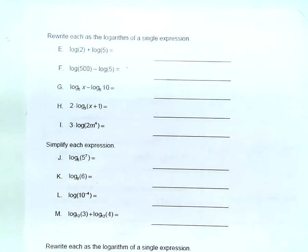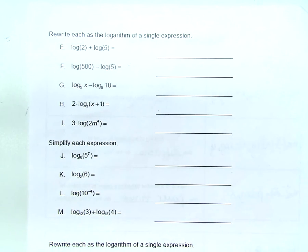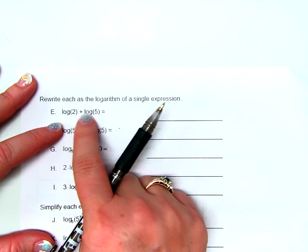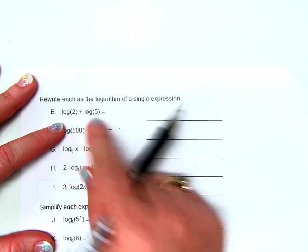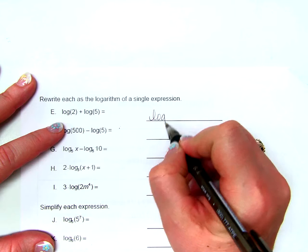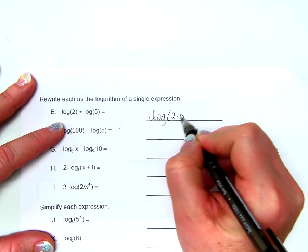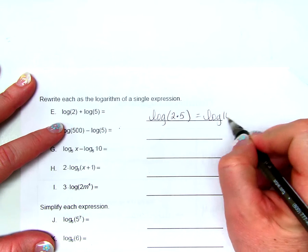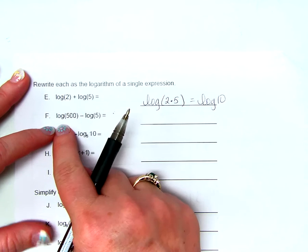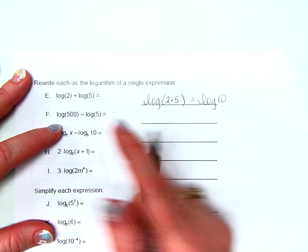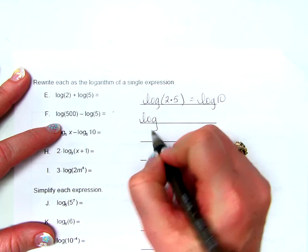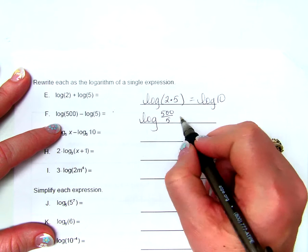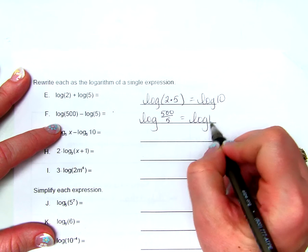Rewriting logarithms as a single expression: log of 2 plus log of 5 equals log of 2 times 5, which equals log of 10. Log of 500 minus the log of 5 equals the log of 500 divided by 5, which is log of 100.